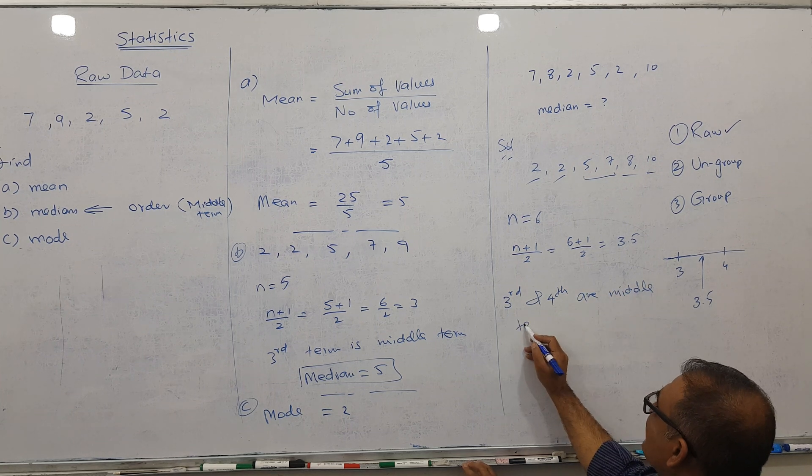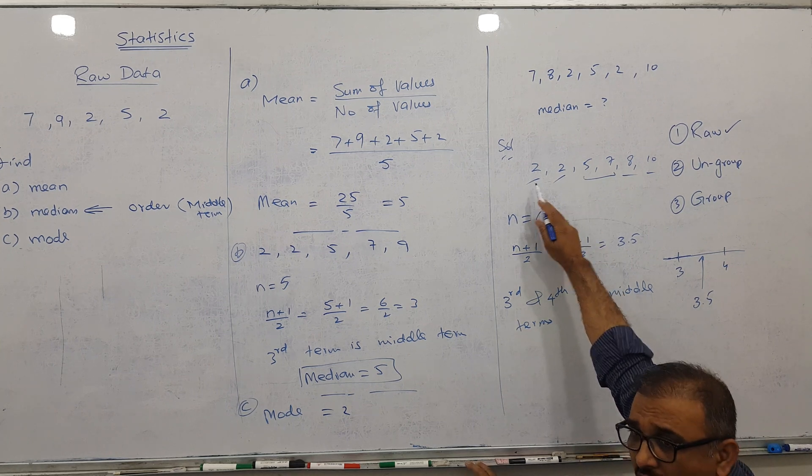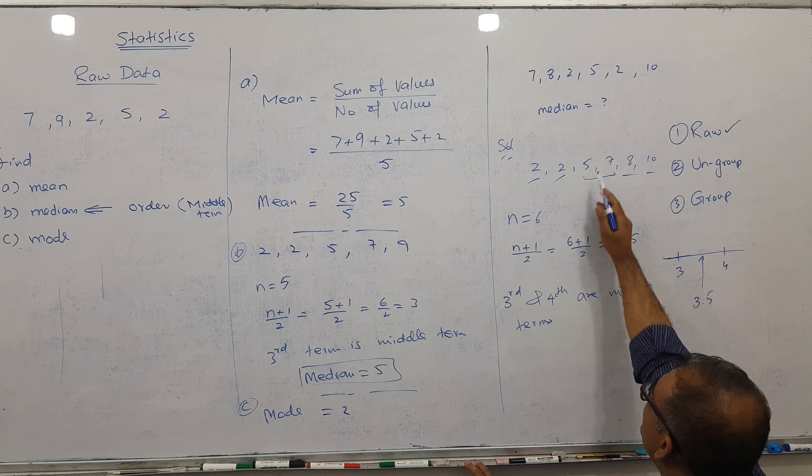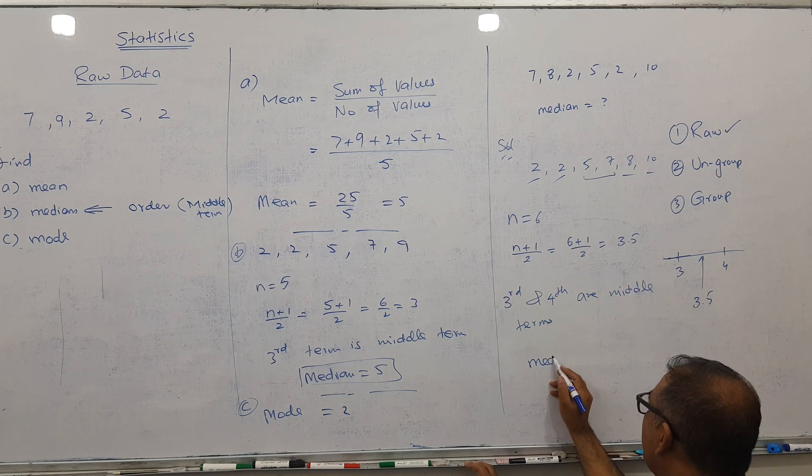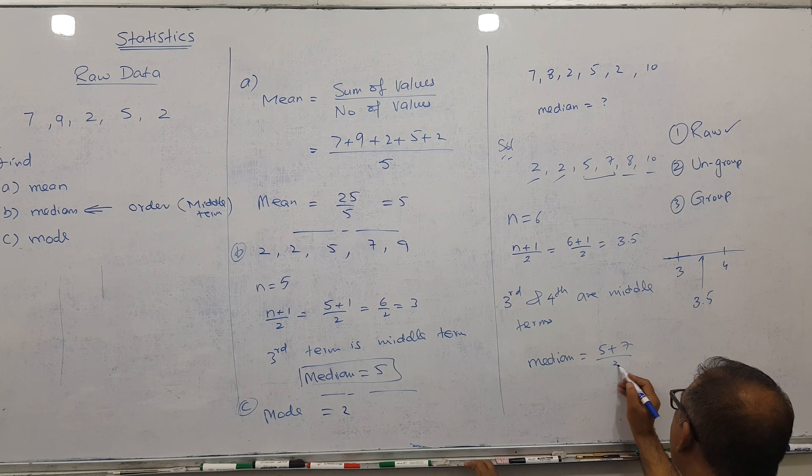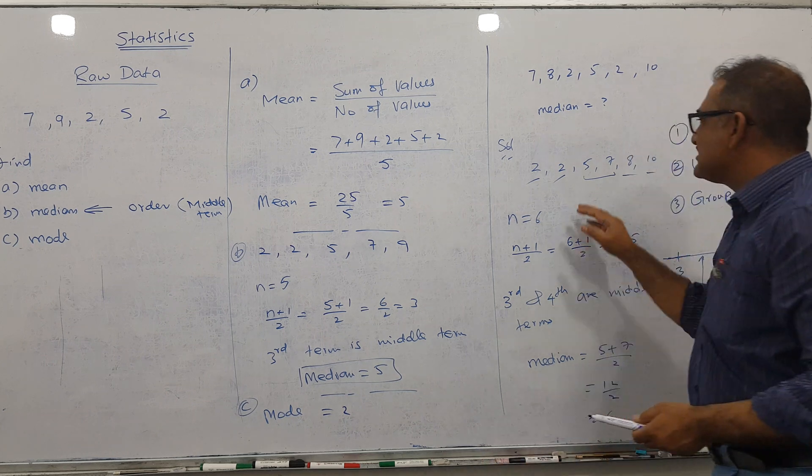Third and fourth come from here. One, two, three, four. My answer is 5 plus 7, so I get 12. 12 divided by 2, I get 6. So median equals 6.